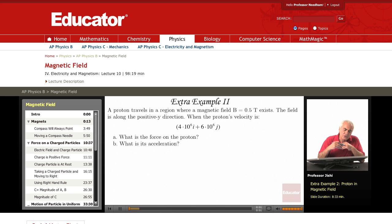Here we have a proton traveling in a region where a magnetic field B is half a Tesla. The field is along the positive y direction, and the proton velocity is this.